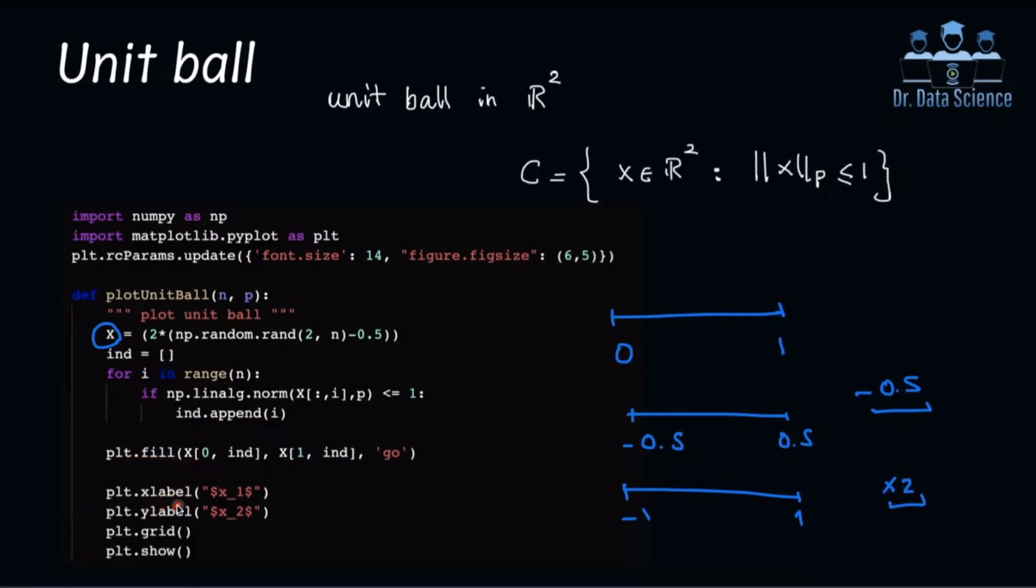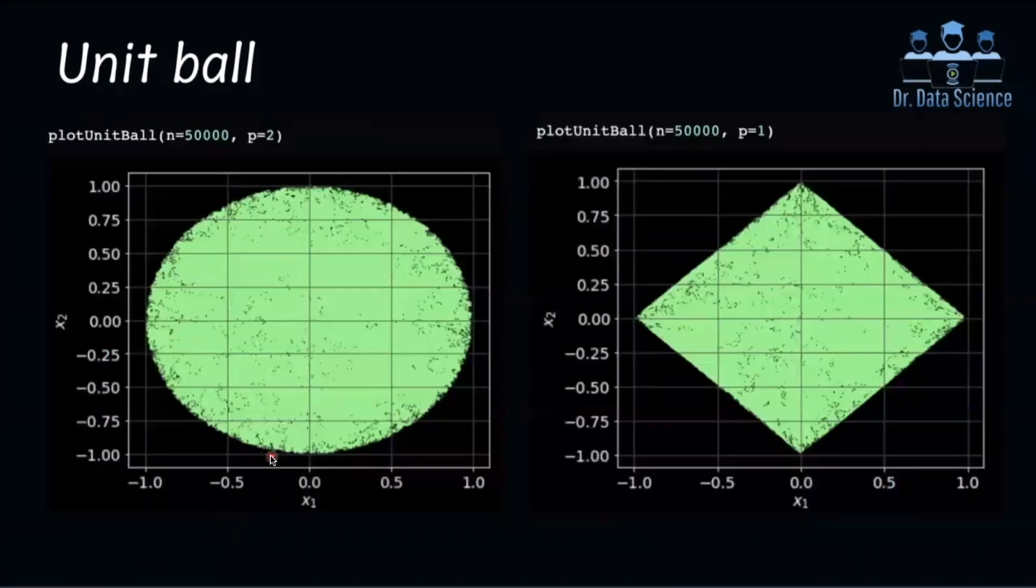Also here you can see we can add x label, y label, so that we have a nice visualization or plot. So if you run this for two choices here, for the p equals 2 and p equals 1, and here I'm also setting the number of data points to 50,000, you can choose any number you want.